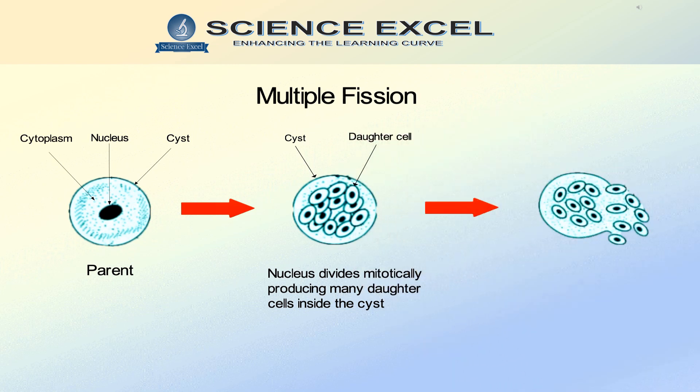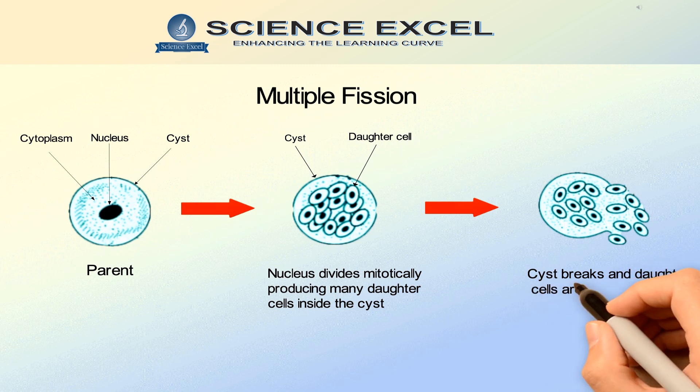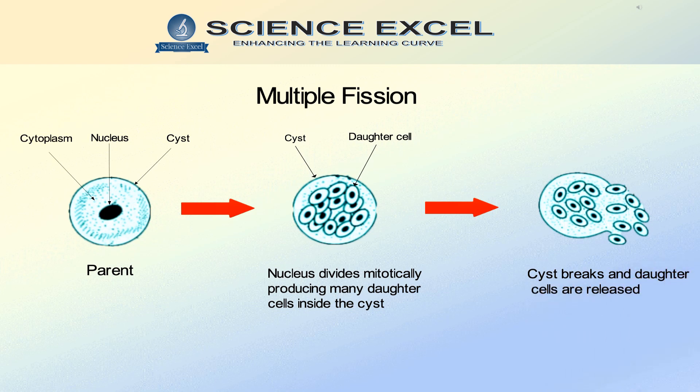This process takes place inside a cyst, which is a protective wall formed around the organism. Under favourable conditions, the cyst breaks open, liberating the daughter cells. Typical examples are bacteria, plasmodium, chlorella, etc.